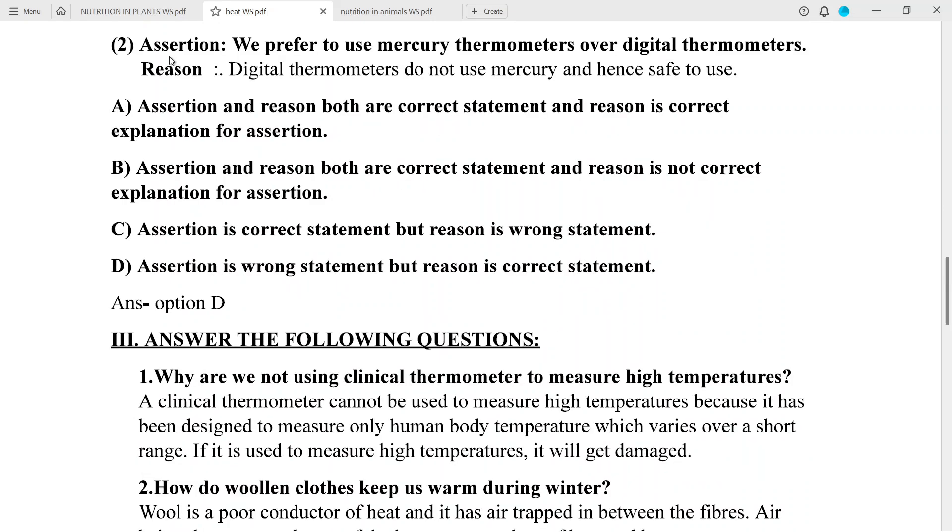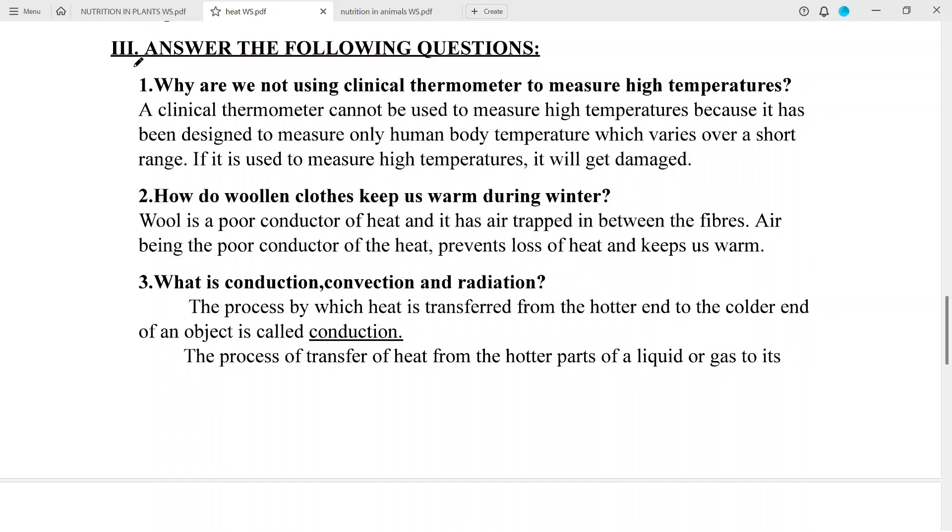Question 2: Assertion - we prefer to use mercury thermometers over digital thermometers. Reason - digital thermometers do not use mercury and hence are safe to use. Answer D: Assertion is wrong statement but reason is correct statement.